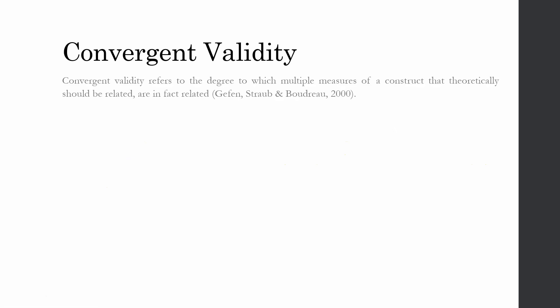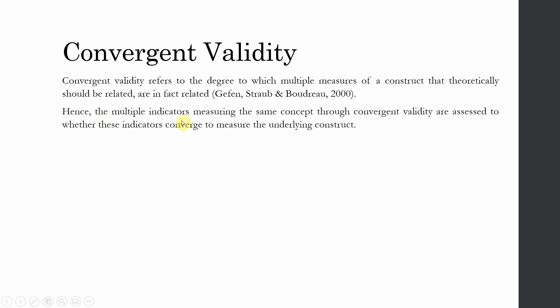Convergent validity refers to the degree to which multiple measures — LS1, LS2, LS3, LS4, and LS5 — that are measuring the construct of life satisfaction, and that theoretically should be related, are in fact related. Since they are measuring the same construct, they should converge or come together to measure the underlying construct. These multiple indicators are assessed to determine whether they converge to measure the underlying construct.